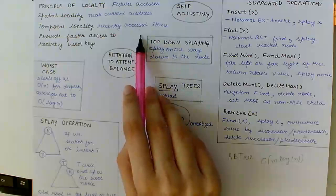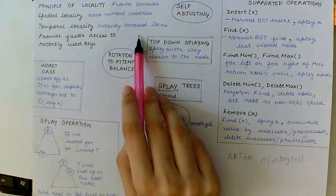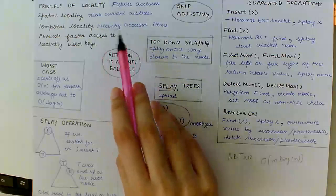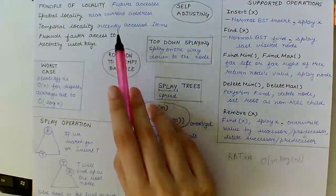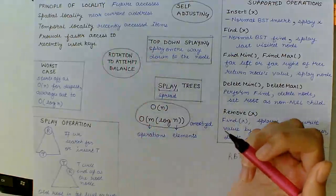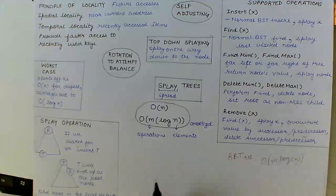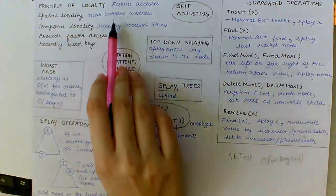Same code and data are repeatedly accessed in loops and subroutines. And the 90-10 rule: Analysis shows that usually 10% of the written instructions account for 90% of the executed instructions.